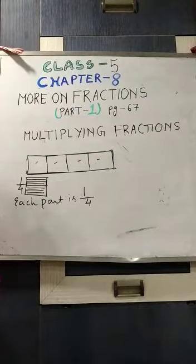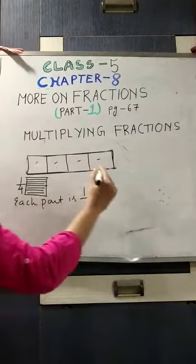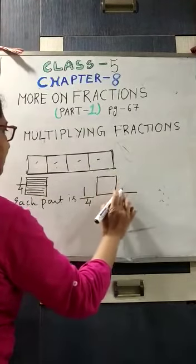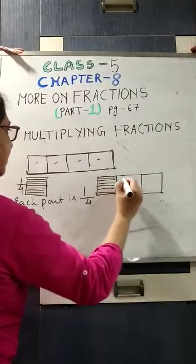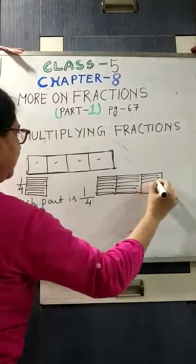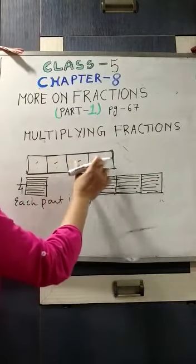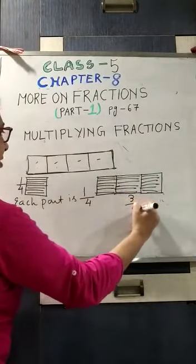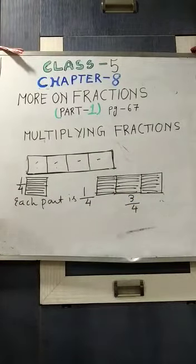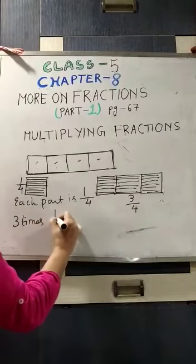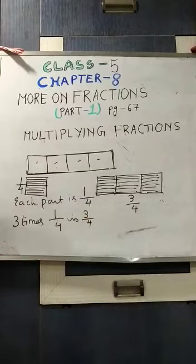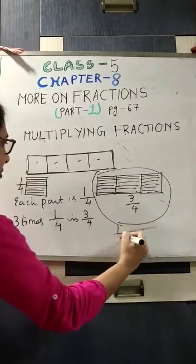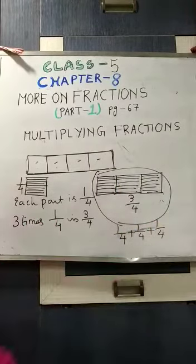So now let us do one thing. We add 3 such shaded boxes: 1, 2, 3. We will take 3 shaded boxes. So that means 4 boxes are there and I have shaded 3, so the fraction will be 3/4. Now, 3 times 1/4 is 3/4. How? If we add 1/4 plus 1/4 plus 1/4, you know how to do the addition.